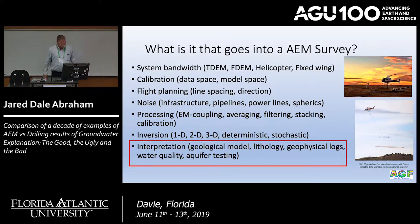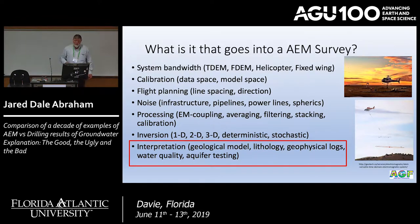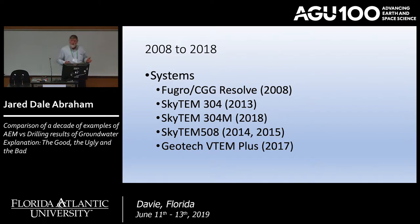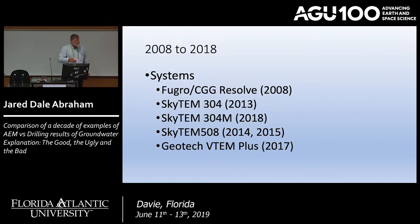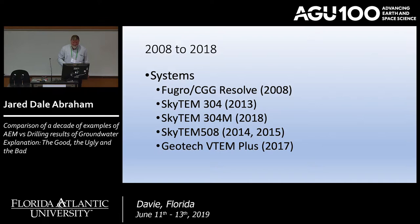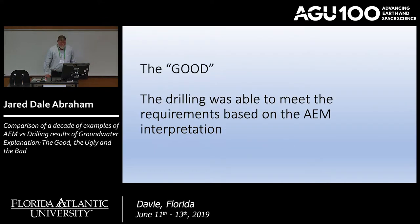What it really comes down to is the interpretation, and I hope to bring that to you today. You need to use a geologic model: lithology, geophysical logs, water quality, aquifer testing. As we go through the good, the bad, the ugly, it's really about how you're using the airborne EM with its limitations to come up with a successful well. The systems we're going to talk about today are the Fugro CGG Resolve from 2008, SkyTEM 304 from 2013, 304M from 2018, SkyTEM 508 from 2014 and 2015, and the Geotech V10 Plus from 2017.